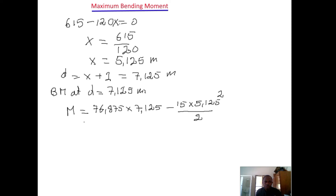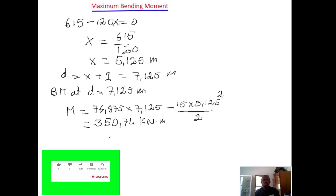So evaluating the equation: 76.875 times 7.125, minus 15 times 5.125 squared divided by 2. This gives us a maximum bending moment of 350.174 kilonewton meters. So this is our maximum bending moment.